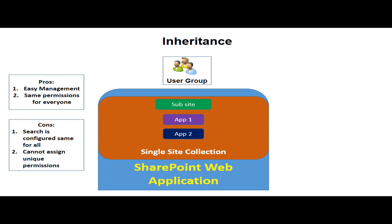In that inheritance you define read permissions for the user groups. The con is that all the documents or related assets available in the SharePoint web application can be accessed by this user group. You cannot define unique permissions — for example, if you want user group A to access only document library one and another user group to access document library two, you cannot achieve that with the inheritance model. For that purpose you have to use the unique permission-based model.